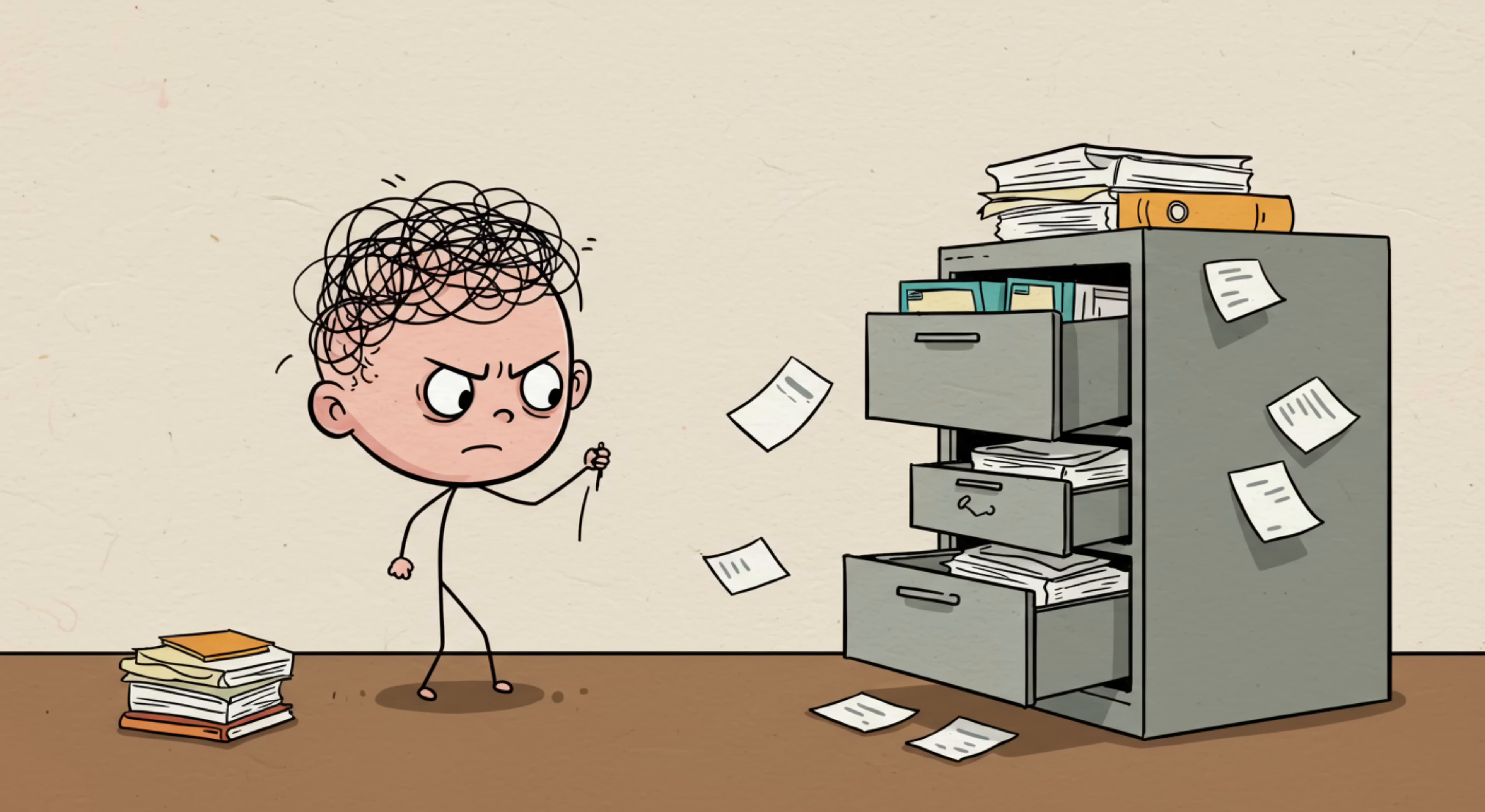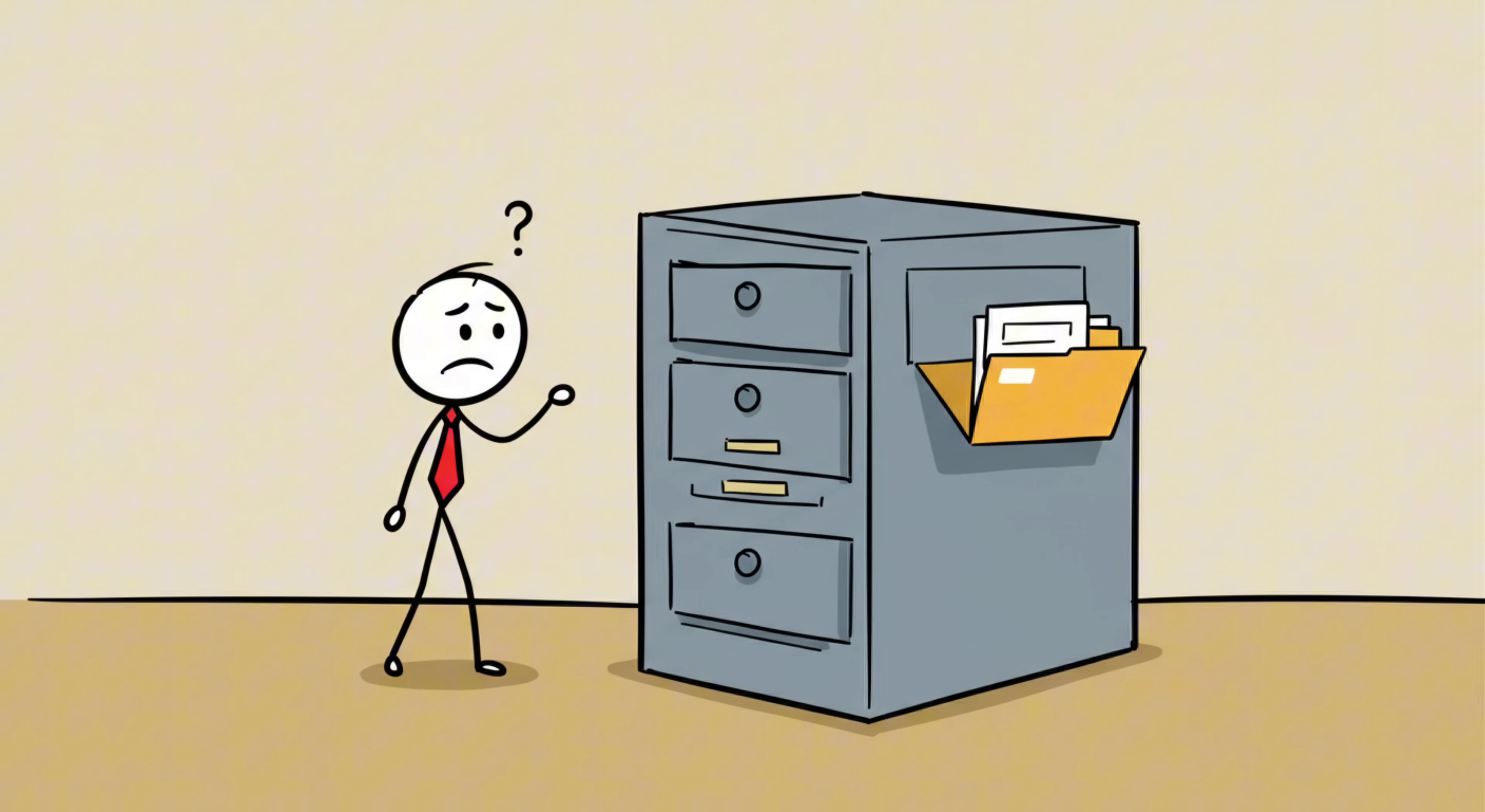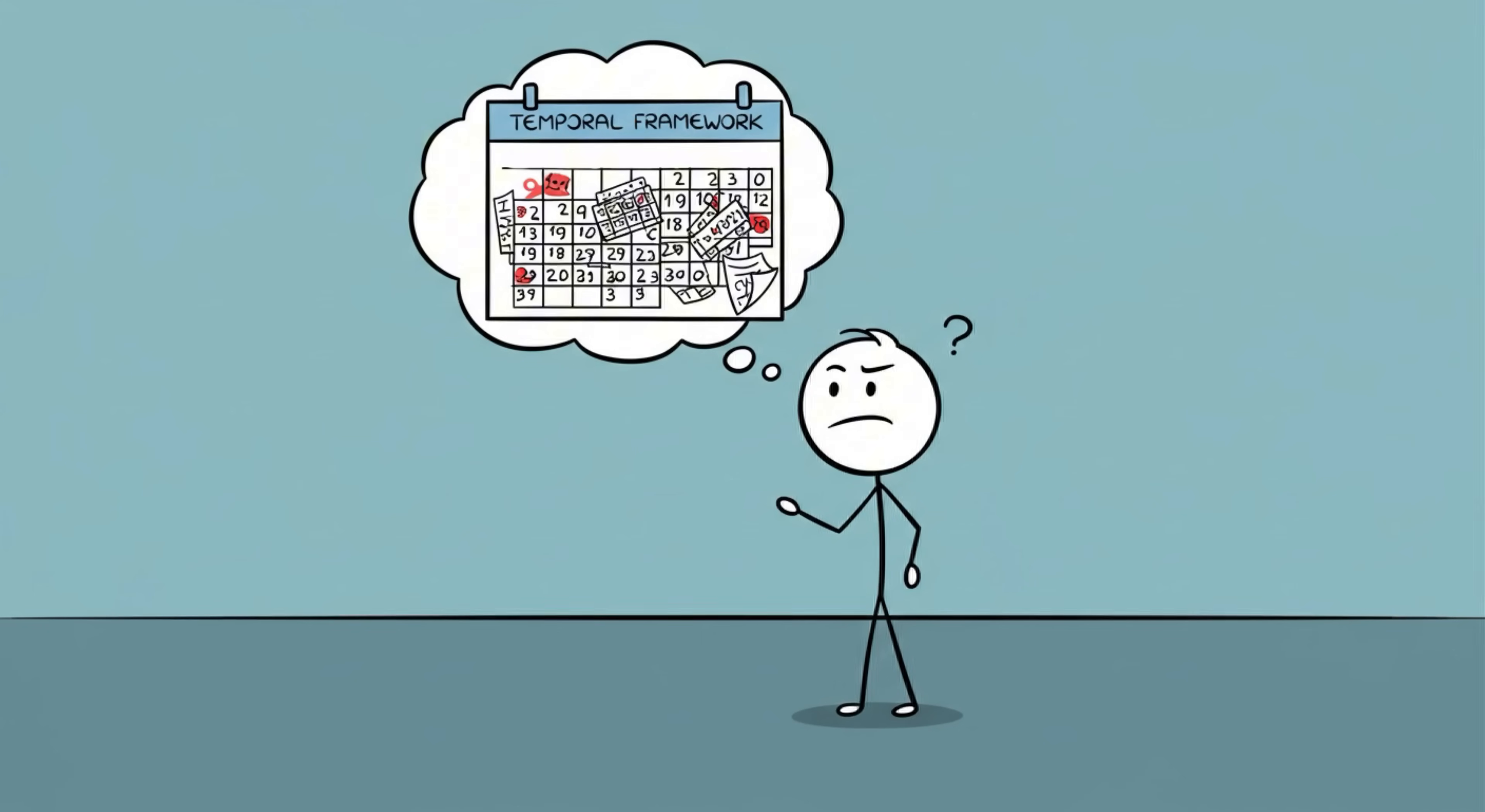Babies don't have a reliable mental filing system yet. The memory cabinet is there, but it's missing folders, labels, and the little plastic tabs. Psychologists call this temporal framework, and without it, your brain can't easily place events in a meaningful order.